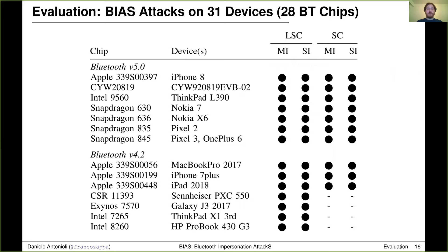We used our implementation to successfully attack 31 devices using 28 unique Bluetooth chips. In this table we present part of our evaluation results. The first column shows the Bluetooth chip, the second column shows the device name, and the last four columns show a solid circle if a device is vulnerable to our BIAS attacks. The third and fourth columns are for the LSC master and slave impersonations, while the last two columns are for the SC master and slave impersonations. A dash in the last two columns indicates that the device does not support Secure Connections and can only be vulnerable to the Legacy Secure Connections attack.